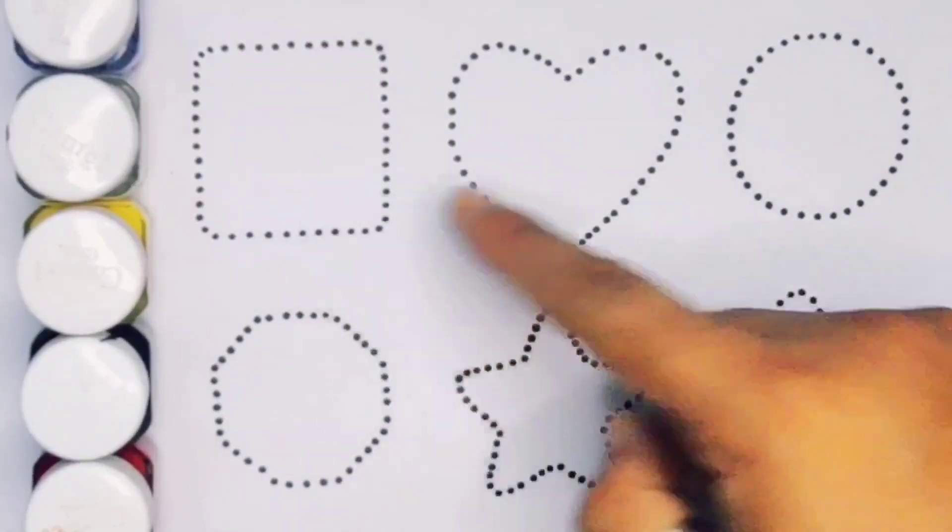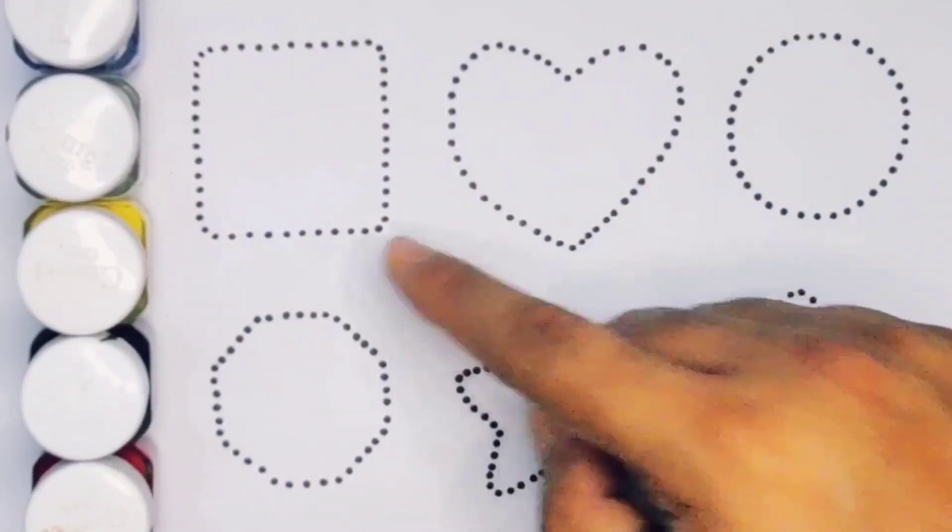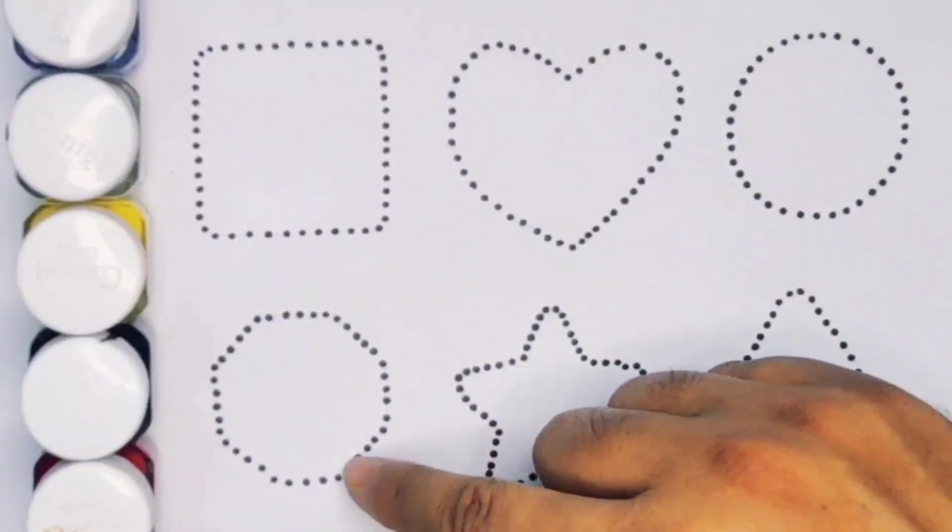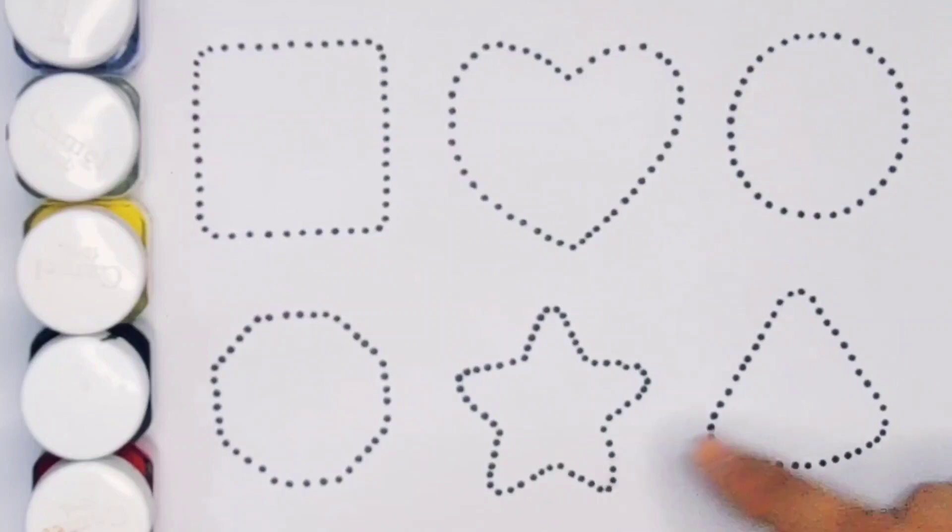Now let's learn the 2D shapes: square, heart, circle, decagon, star, and triangle.